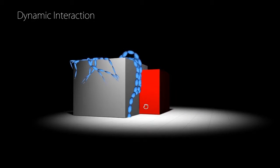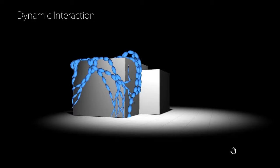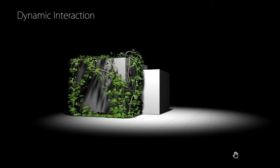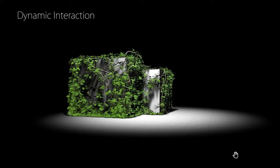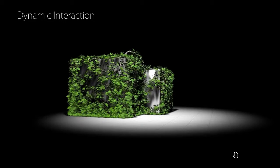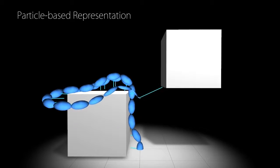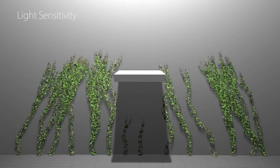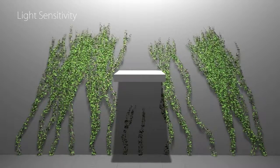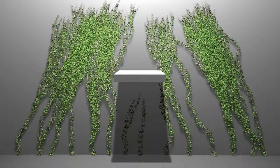Our plants are modeled as dynamically interacting particle systems. They can be edited at any time while they also dynamically interact through changes in the environment. Each particle stores biological and physical attributes that drive plant growth and its adaptation to the environment. In particular, we model light sensitivity, the influence of gravity, and adaptation to obstacles.